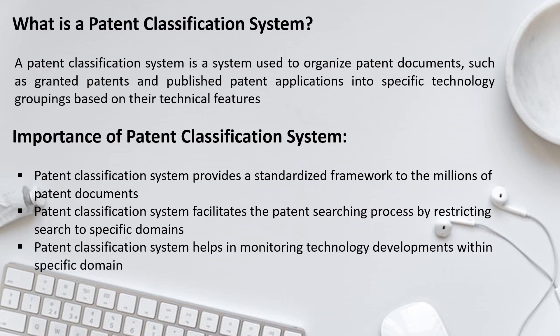The next point is that the patent classification system helps in monitoring technology developments within a specific domain. If I want to see the trend of filing patents in a specific technology — for example, artificial intelligence — I can use the specific classification code related to AI instead of keywords, and then find patents, filing trends, or geographies where patents are being filed. That is how the patent classification system becomes an essential feature in the entire patent system.